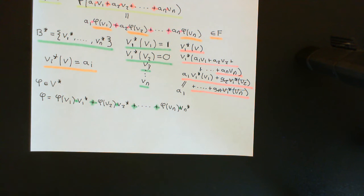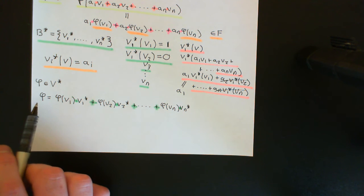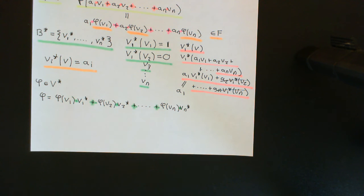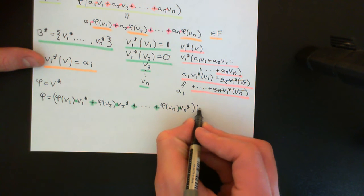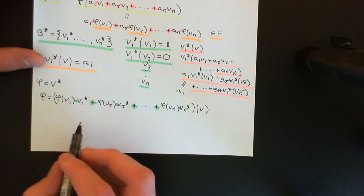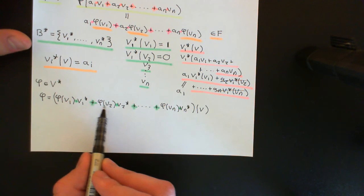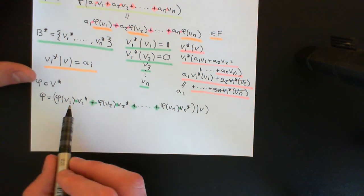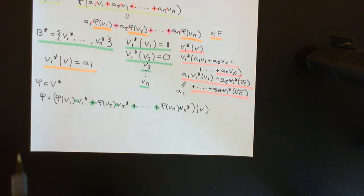What we want to understand is why this linear combination sends some vector onto the exact same thing as phi would. We want to confirm that this expression sends a vector V onto phi(V). Let's explore what this expression actually does to a vector V. We can apply the definition of addition in the dual vector space — we have an arbitrary finite string of dual vectors added together, but the definition extends to this in a straightforward way.